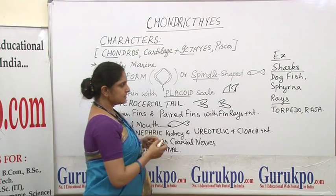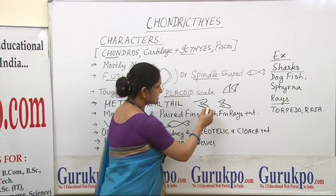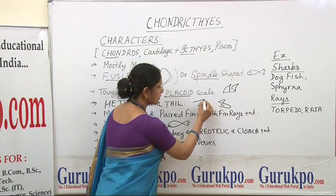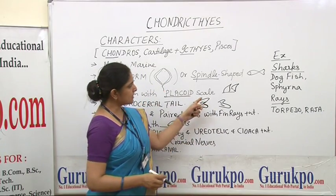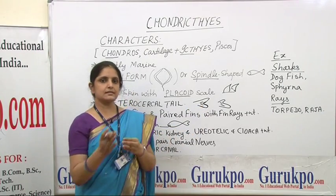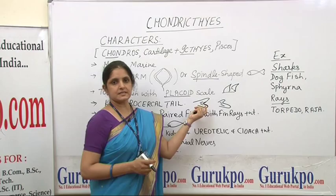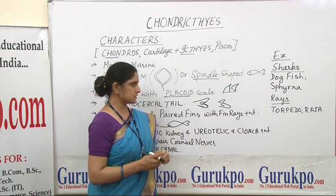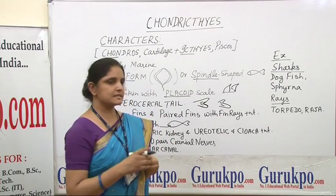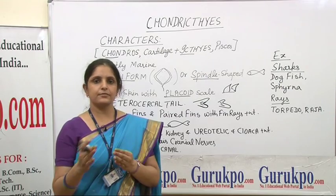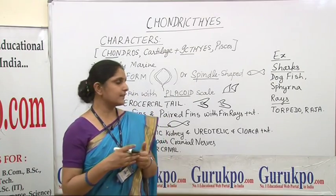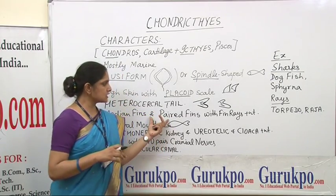The next feature is the heterocercal tail. The tail fin is lobed in almost all fishes, and if the upper lobe and the lower lobe are of unequal size, such a tail is called a heterocercal tail. This type of tail fin is characteristic of cartilaginous fishes. Also present are median fins and paired fins — pectoral fins anteriorly and pelvic fins posteriorly. This is present in Osteichthyes as well.